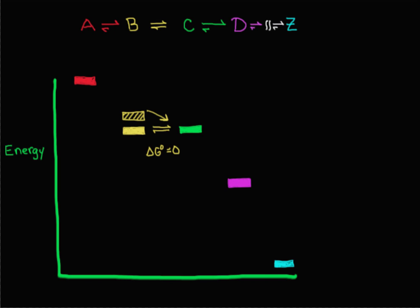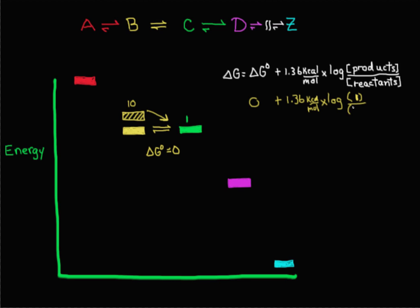We can calculate how favorable that reaction could be with this relationship between delta G and delta G0. For this reaction, B to C, the delta G0 is 0. And let's say now that our reactants are 10 times greater than our products. We can plug this into the equation here. So we have the delta G0 of 0 plus 1.36 kcals per mole times the log of the products. Products are 1 and reactants are 10. So the delta G0 equals 0 plus 1.36 kcals per mole times minus 1 because the log of 1 over 10 is minus 1. So this is a favorable reaction, minus 1.36 kcals per mole.